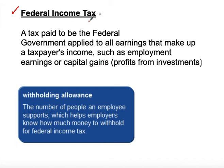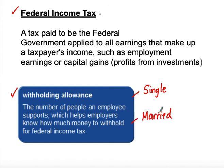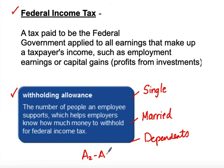To understand federal income tax, the federal government allows us to have withholding allowances depending on how many dependents you have — do you have a husband, a wife, children? We calculate those withholding allowances based on the number of people an employee supports. If it's just themselves they would file single; if they have a spouse they would file married; and if they have children they would file with dependents. We'll use tables A2 through A5 in the appendix section of your book.